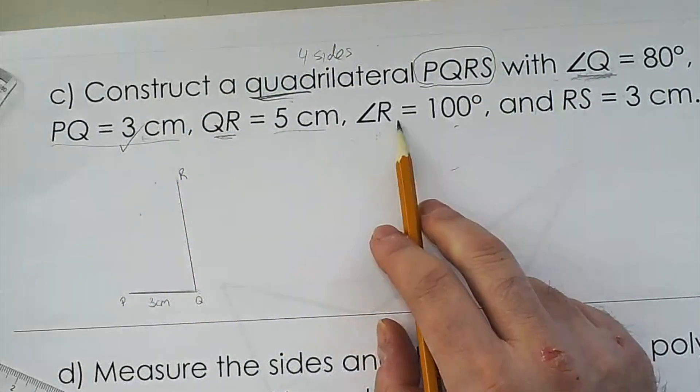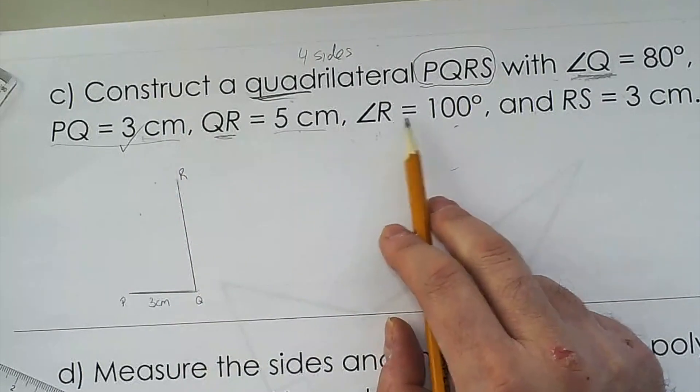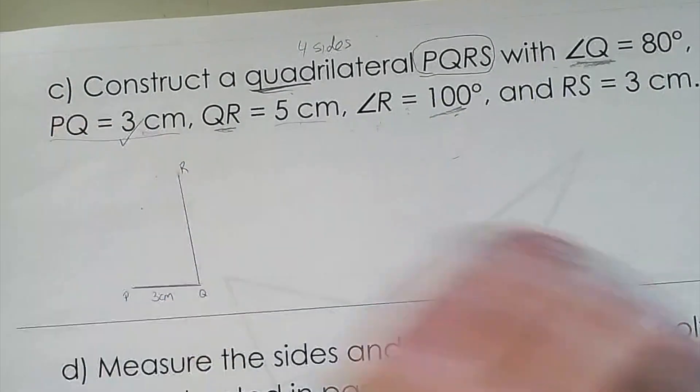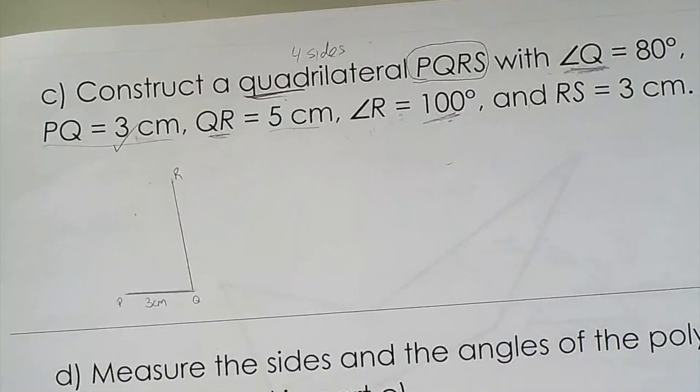And the next thing it's asking is R has to be 100 degrees. So this is something I would just flip the page with.